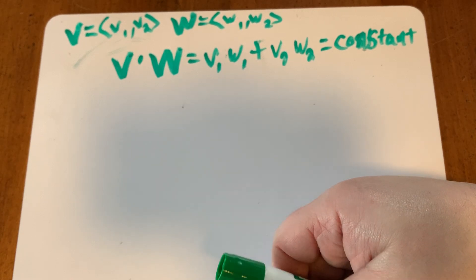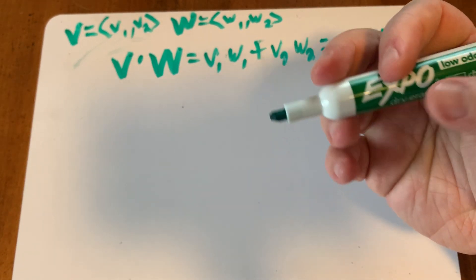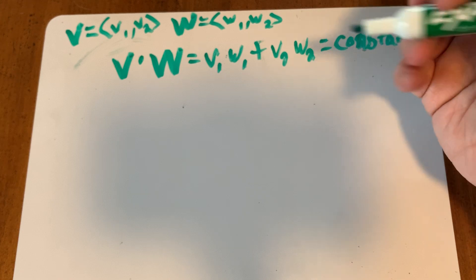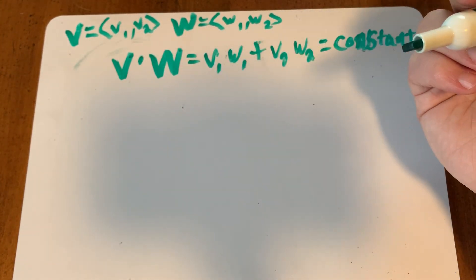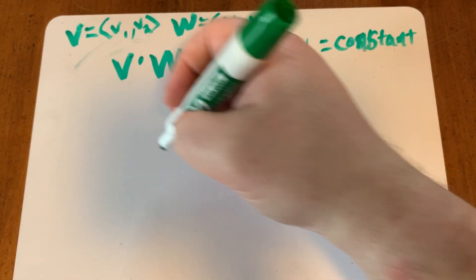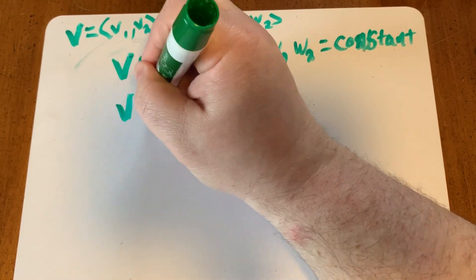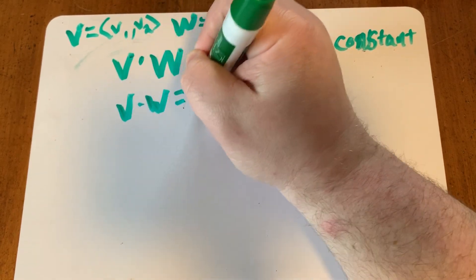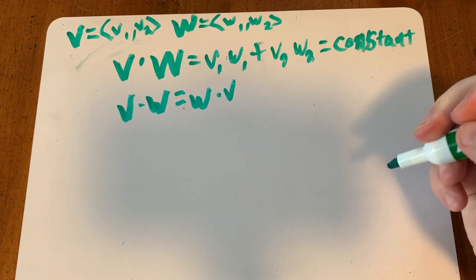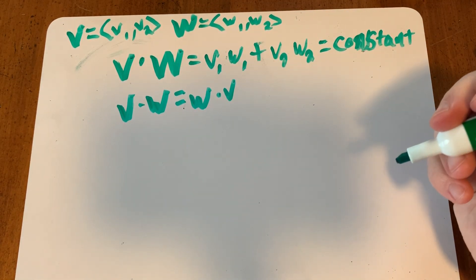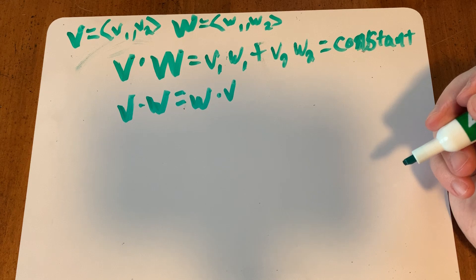Some properties of dot products: the order doesn't matter, it's commutative. So V dot W equals W dot V.